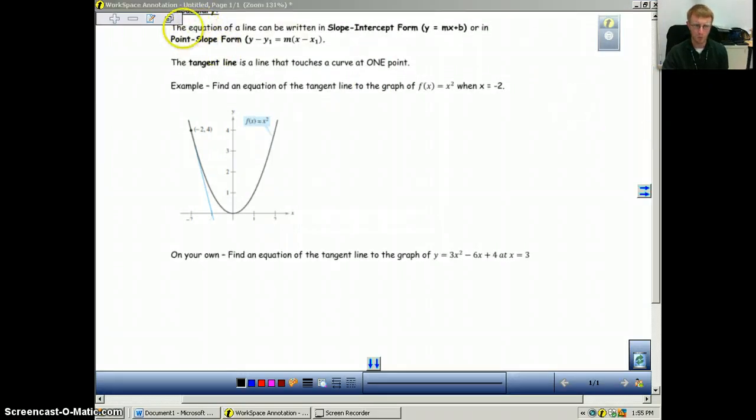So one thing that we want to talk about is there are two different forms we can use. We can use either slope-intercept form, y equals mx plus b, or we can use point-slope form, y minus y1 equals m times x minus x1.